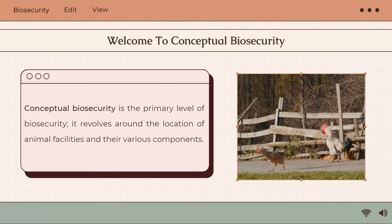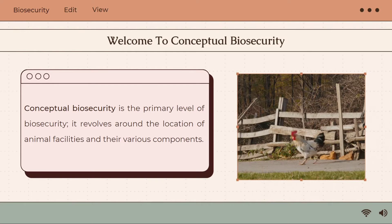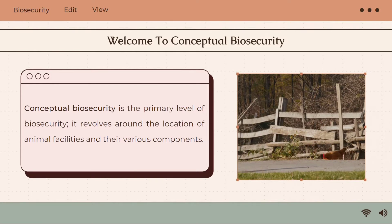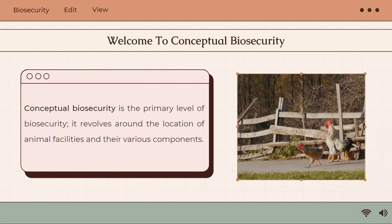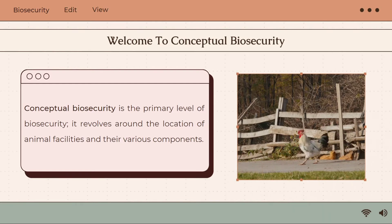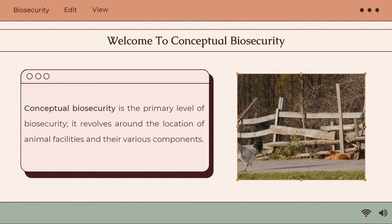Conceptual biosecurity is the primary level of biosecurity. It revolves around the location of animal facilities and their various components. In this type of biosecurity, the most effective way to limit risk is physical isolation, making this a primary consideration when setting new confinement facilities or farms.